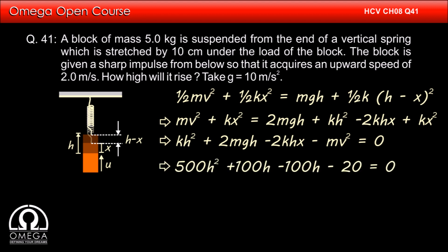Putting the values, we get 500h square plus 100h minus 100h minus 20 equals 0, or 500h square minus 20 is equal to 0.